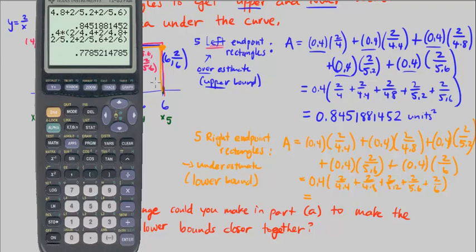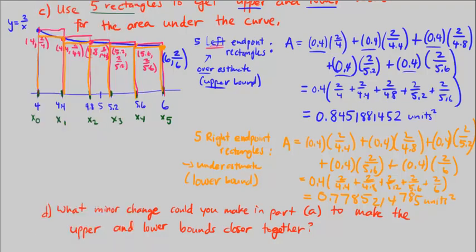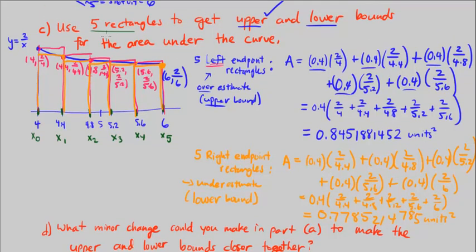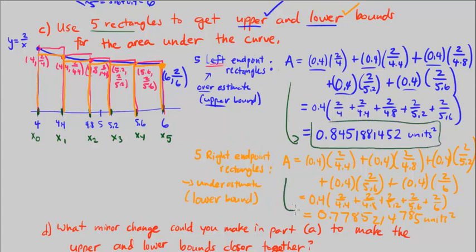Enter this into your calculator and get a lower bound of 0.7785214785 units squared. So we used 5 rectangles to get an upper bound and 5 rectangles to get a lower bound. The upper bound was approximately 0.8452 and the lower bound was approximately 0.7785.